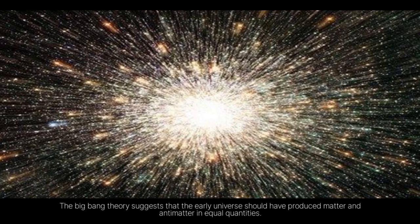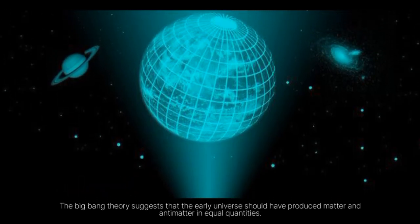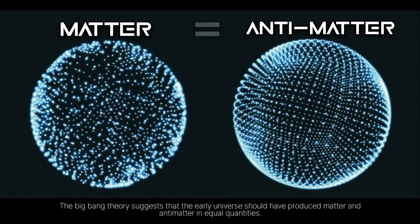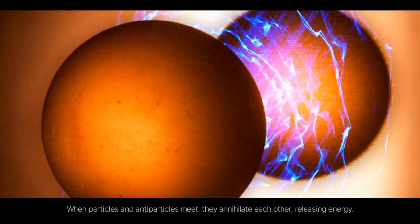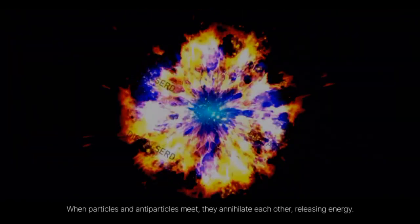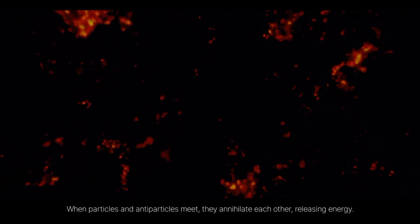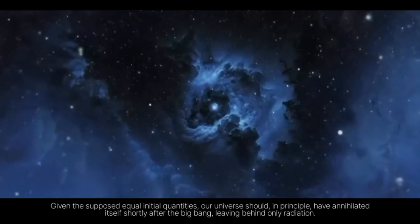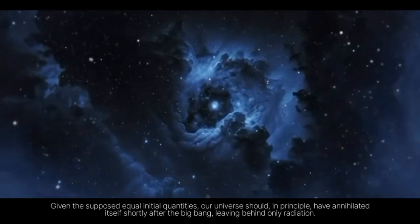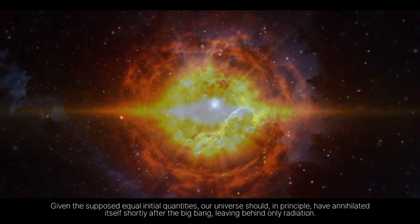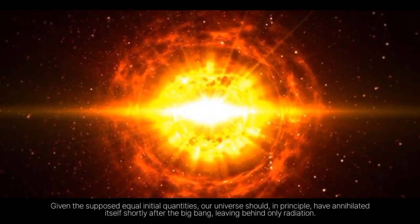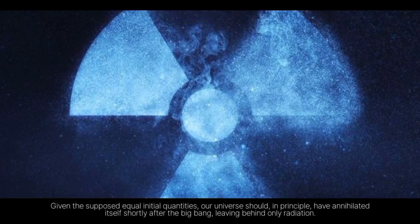The Big Bang Theory suggests that the early universe should have produced matter and antimatter in equal quantities. When particles and antiparticles meet, they annihilate each other, releasing energy. Given the supposed equal initial quantities, our universe should, in principle, have annihilated itself shortly after the Big Bang, leaving behind only radiation.